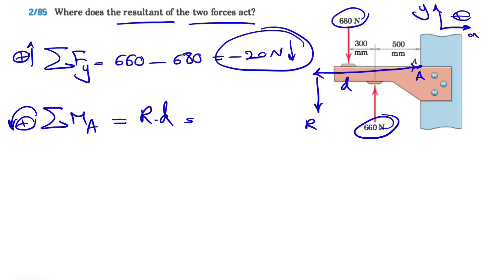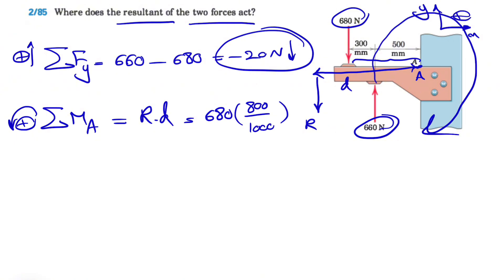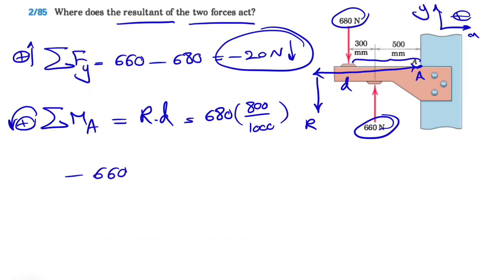So we can start with the 680 Newton force. As we can see, it creates a counterclockwise moment, so it's positive: 680 Newtons times the distance, which is 500 plus 300 = 800 mm, divided by 1000 to get it in meters. Then we have the moment of 660, which is a clockwise moment, so it has a negative sign: minus 660 times the distance from here, which is 500 divided by 1000. That equals R times D, where R is already known to be 20.